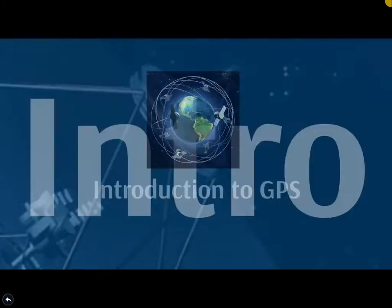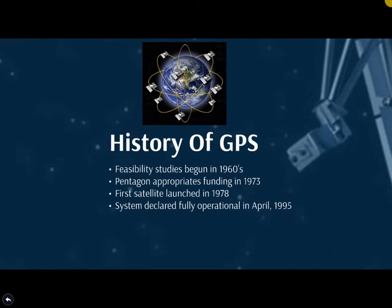Next, we will discuss the history of the GPS. The GPS project was launched in the United States in 1973 to overcome the limitations of previous navigation systems. Previously, the need for navigation was fulfilled by using the stars and older systems like the magnetic compass. Those systems had limitations, so to overcome them, the project was launched in 1973. The Pentagon appropriated the funds for that project, and the department started working and launched its first satellite in 1978.